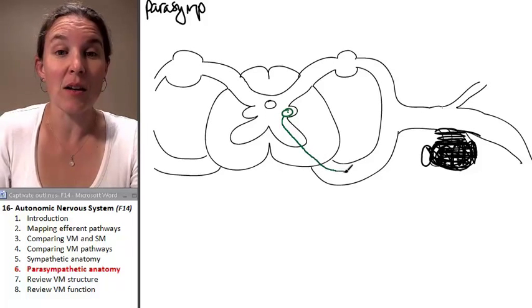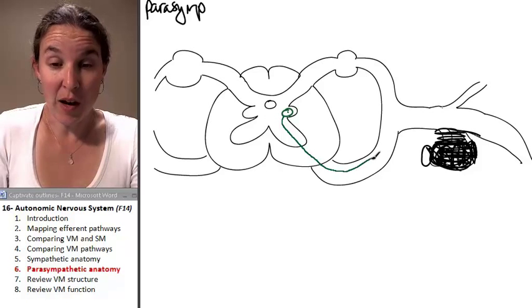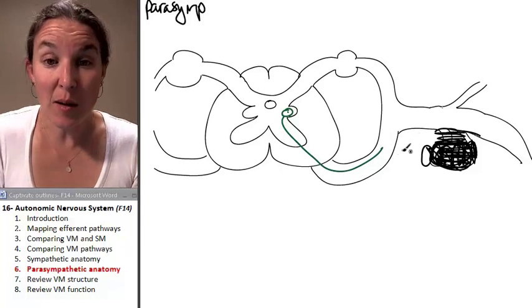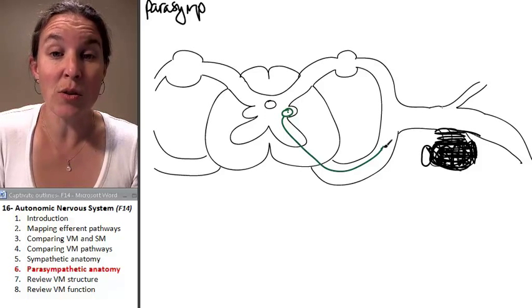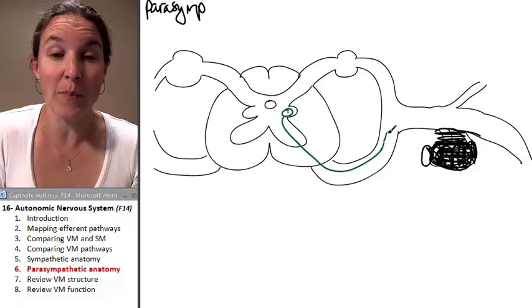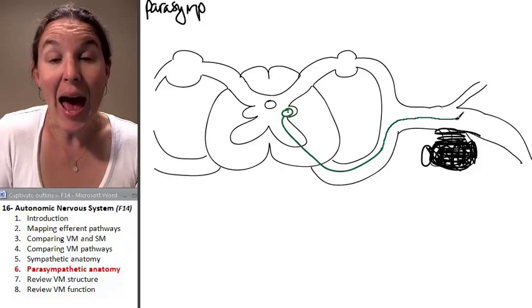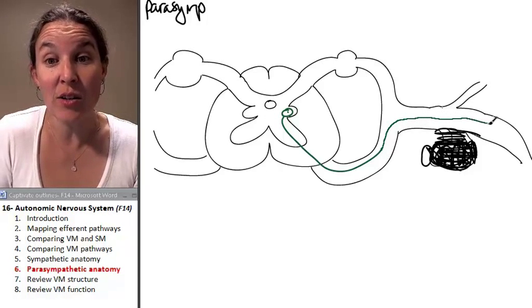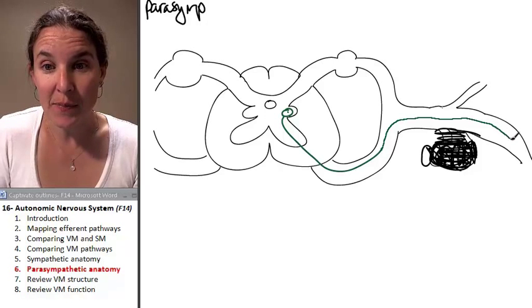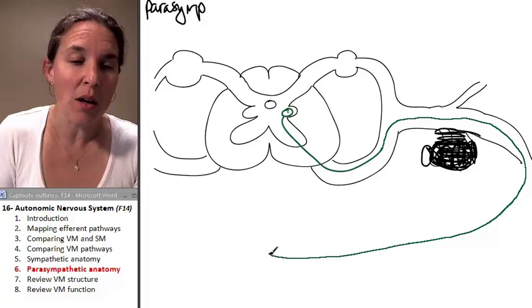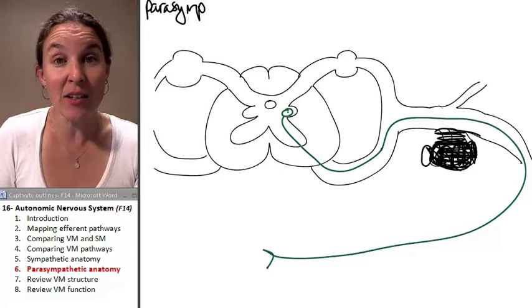we've got this parasympathetic fiber that comes through, just like everybody else, comes through the anterior root, through the spinal nerve, and then, remember, this guy is so long. And this is my preganglionic neuron.